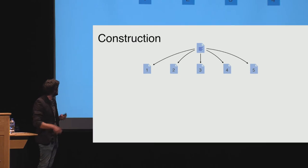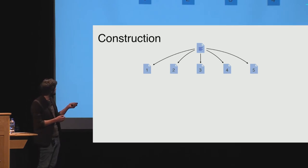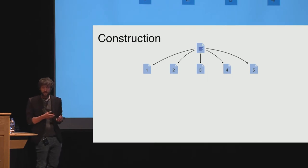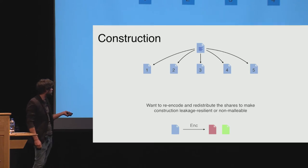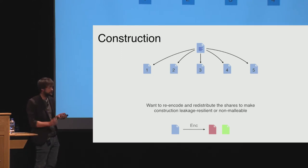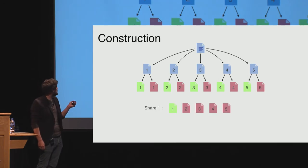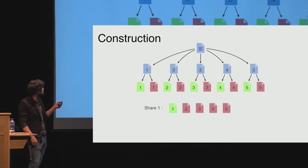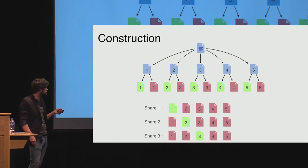On a high level, given a secret sharing scheme for some access structure, we take those shares and re-encode them into new shares to obtain leakage resilience and non-malleability. We use an encoding function that takes each original share and produces two different shares — a green one and red ones. For the j-th party, the new share consists of the green part of the j-th share and all the red parts from every other share. To reconstruct from, say, the first and second shares, we combine their respective parts to reconstruct the original two shares, and if the access structure allows these to reconstruct the secret, the whole construction succeeds.